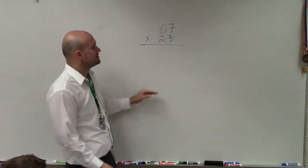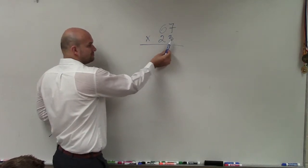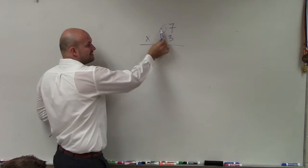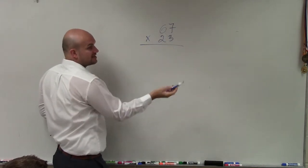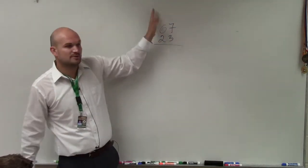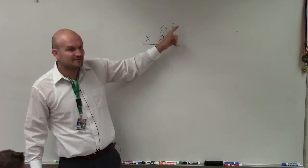In this case, what we want to make sure we're going to do is we're going to start with our tens column here, with the 3. And we're going to multiply the 3 times the 7 and the 3 times the 6. Again, just like addition, when we have up to the tens, we need to make sure we carry that over. So 3 times 7 is 21.